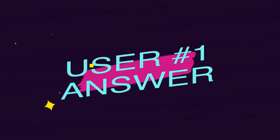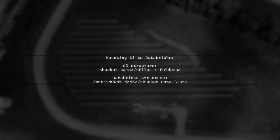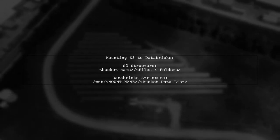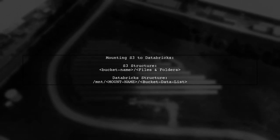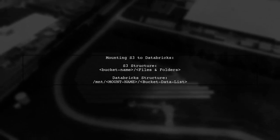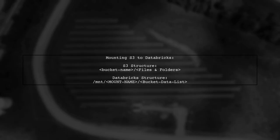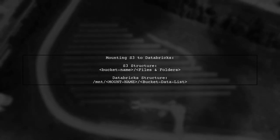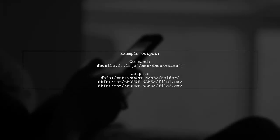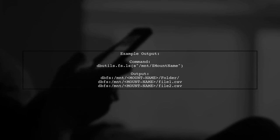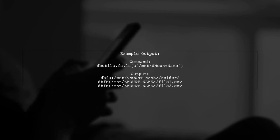Let's now look at a user-suggested answer. When you mount S3 to Databricks, it only shows the folders and files directly under the bucket. In S3, you'll see your bucket name followed by the files and folders. In Databricks, the structure changes slightly, showing the mount name and the bucket data list. For example, when you run the command to list the contents of your mount in Databricks, you'll see the output formatted with the mount name followed by the folders and files.